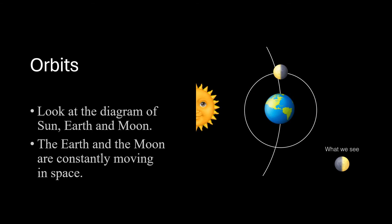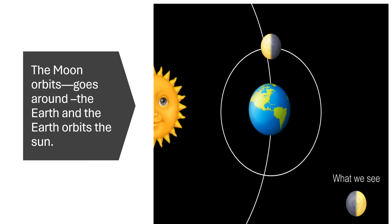Orbits: Look at the diagram of the sun, earth, and the moon. The earth and the moon are constantly moving in space. The moon orbits, or goes around, the earth and the earth orbits the sun.